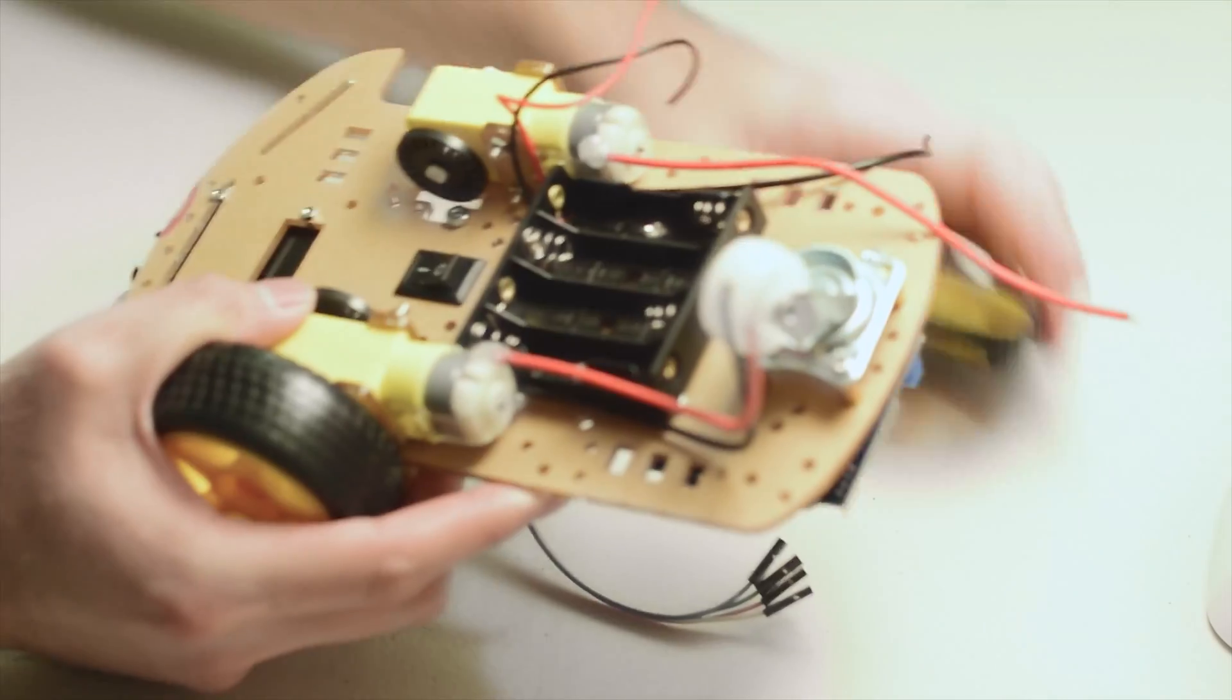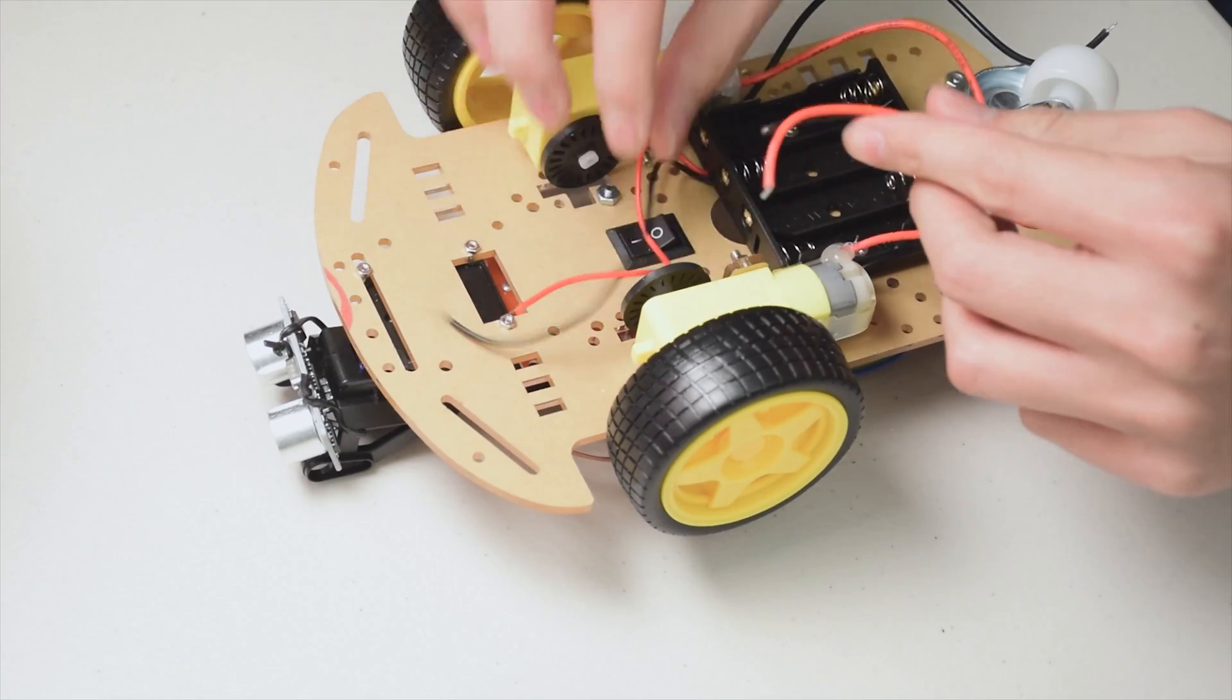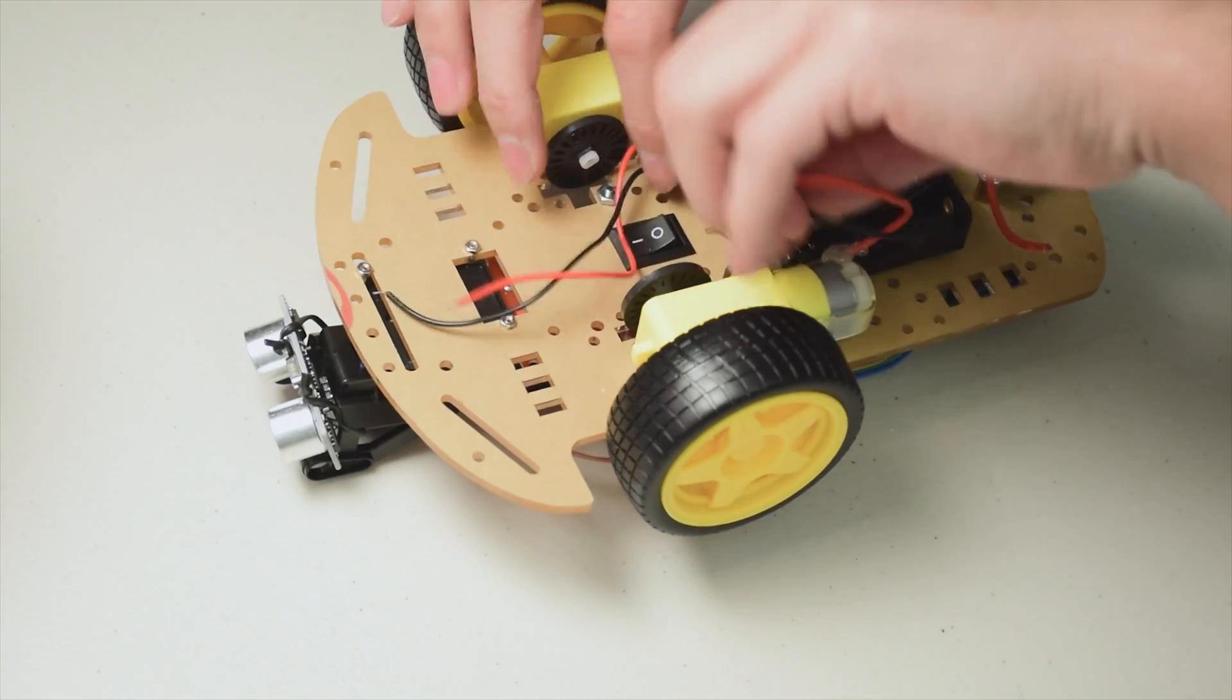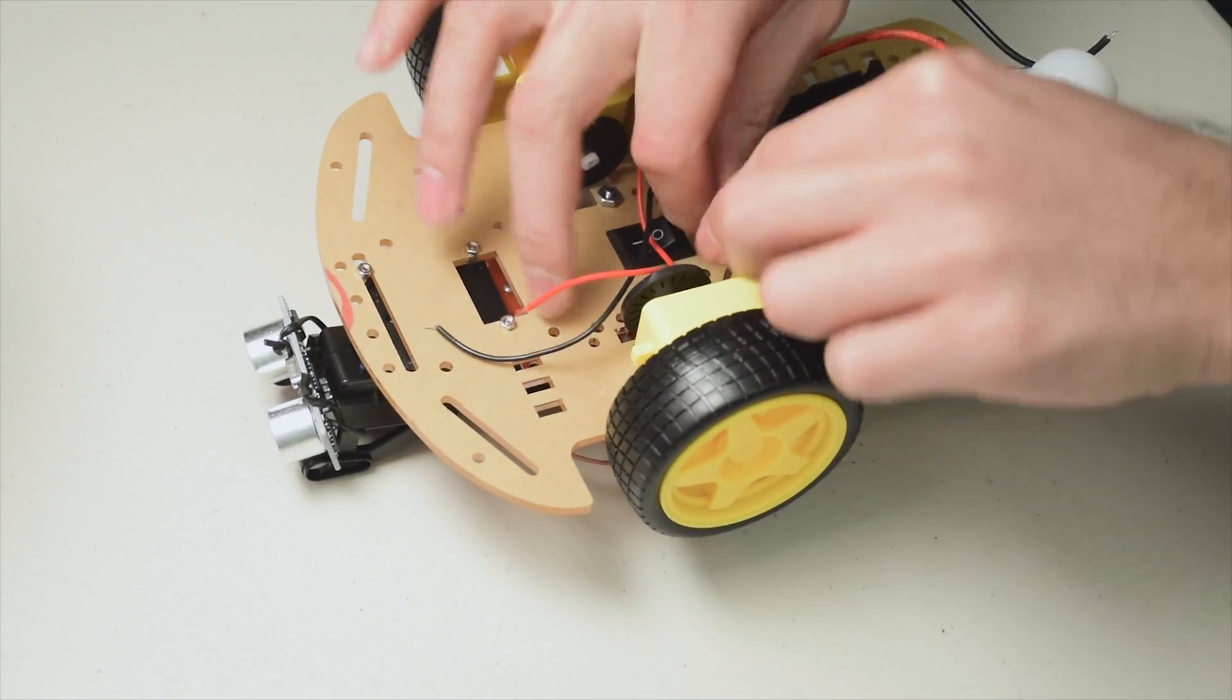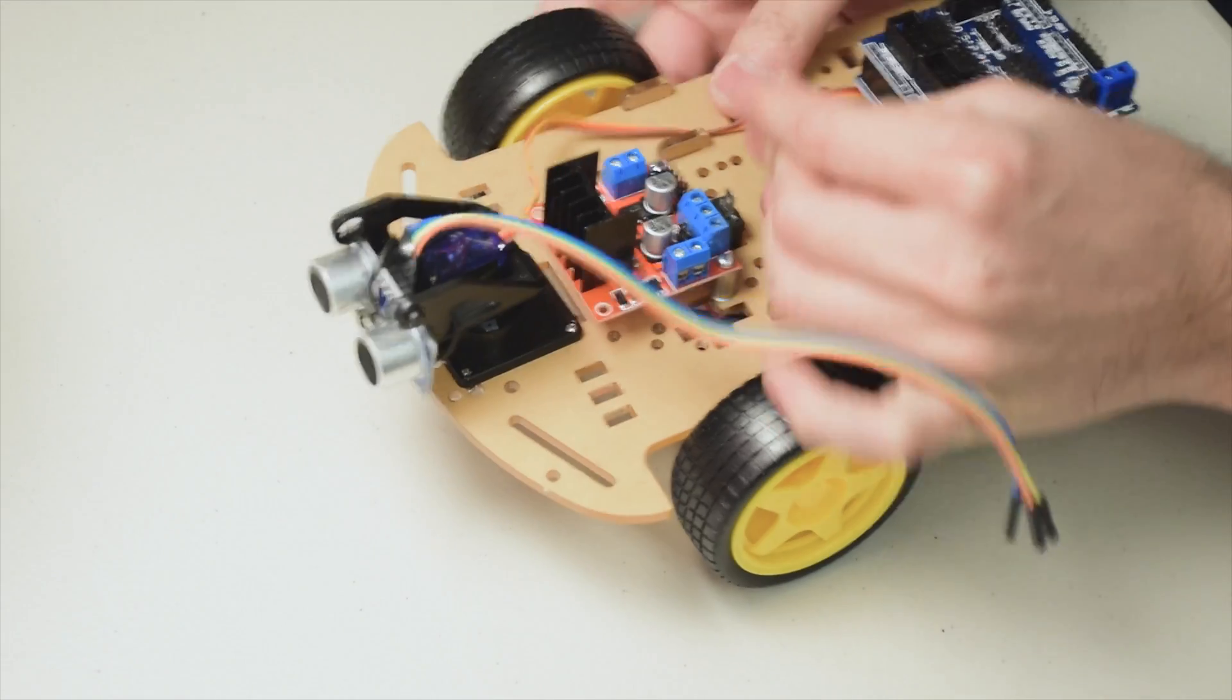Once the motors are back into position, we can connect them to the L298N. We will need to pass the wires through the circular cutout in the middle to the other side of the car. Then connect the four wires to the motor terminal blocks on both sides.